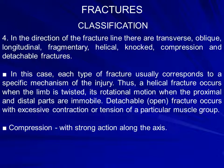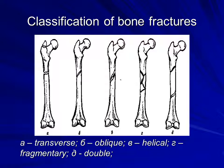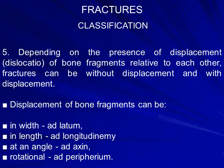Each type of fracture usually corresponds to a specific mechanism of injury. A helical fracture occurs when the limb is twisted in rotational motion with proximal and distal parts immobile. Avulsion fractures occur with excessive contraction or tension of a muscular group. Compression occurs with a strong force along the bone axis. In the images, the classification of bone fractures is shown: A — transverse, B — oblique, C — helical, D — fragmentary and double.